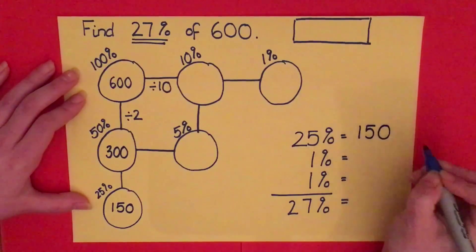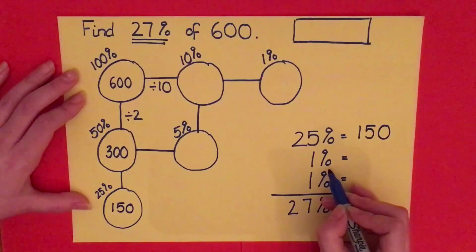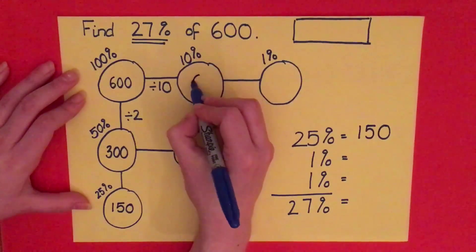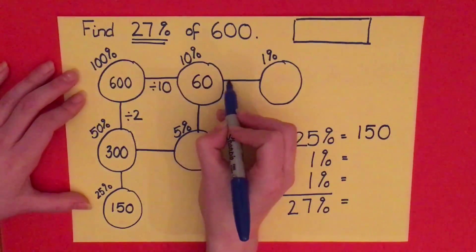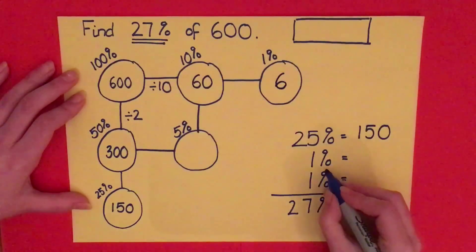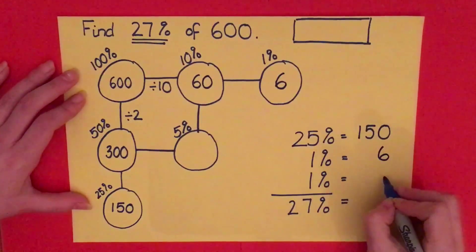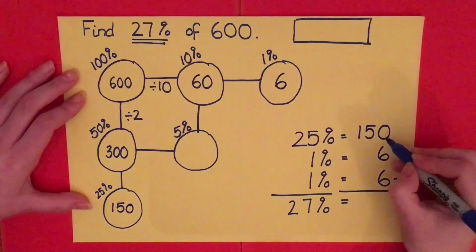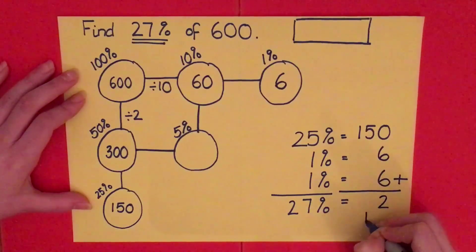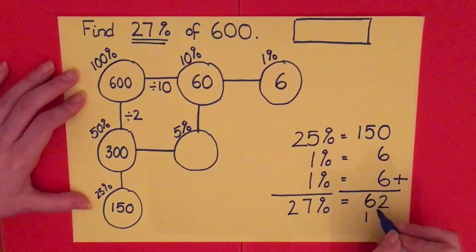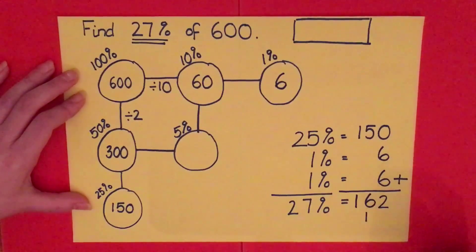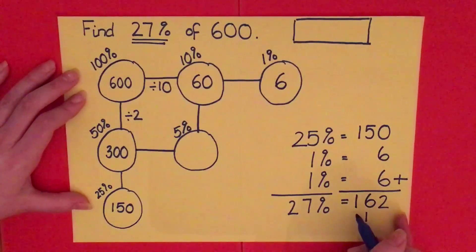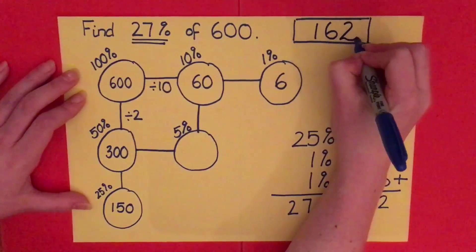Now I need the 1% bubble. Starting at 100% with 600, I divide by 10 to get 60, then divide by 10 again to get 6. So 1% of 600 is 6, and I have two of those bubbles. Adding the values: 150 + 6 + 6 — units first: 6 + 6 = 12, carry the 1; 5 + 1 + 1 = 7; and 1. So 27% of 600 is 162.